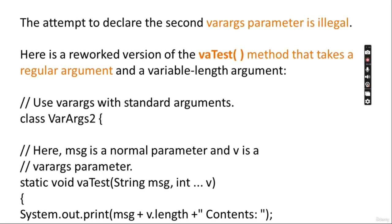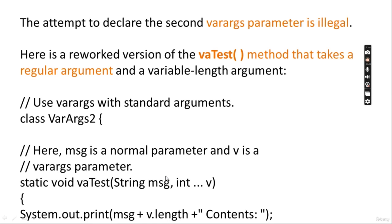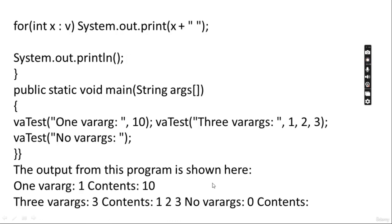Here is a version of vaTest that takes one regular argument and a variable length argument: static void vaTest(String message, int... v). It prints the message plus v.length as contents, then iterates printing each element. Calls like vaTest('one variable argument', 10), vaTest('three variable arguments', 1, 2, 3), and vaTest('no variable arguments') produce: one variable argument, 10; three variable arguments, 1 2 3; and no variable argument, 0 contents.